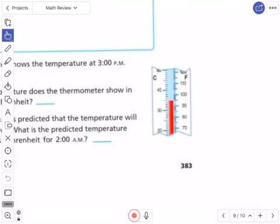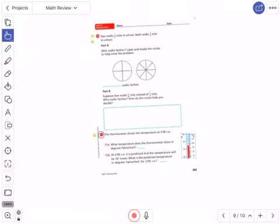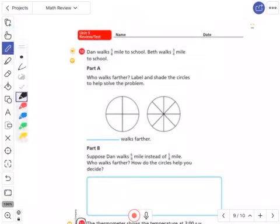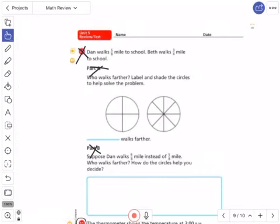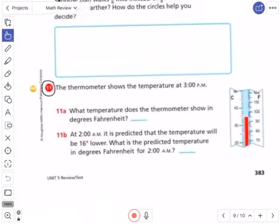Now I'm going to go to page 383. On page 383, you are not doing number 10, so you can cross off number 10, both part A and part B. You are doing number 11 though.